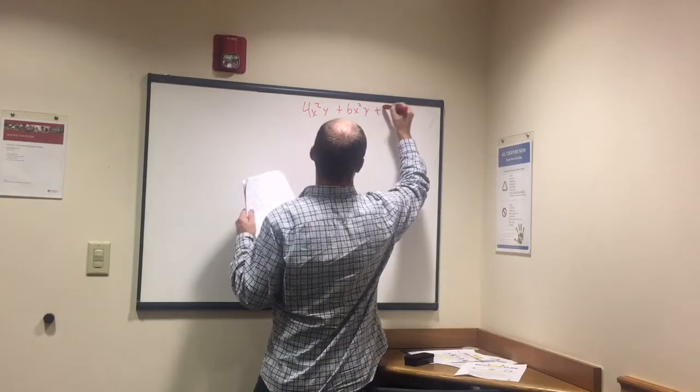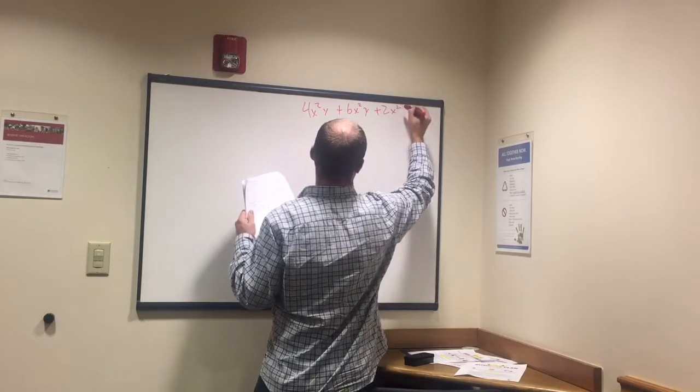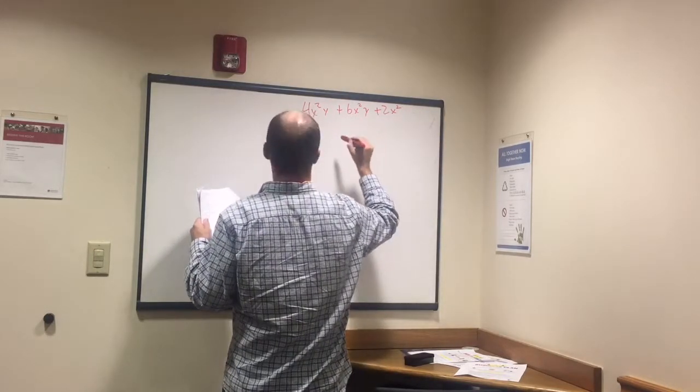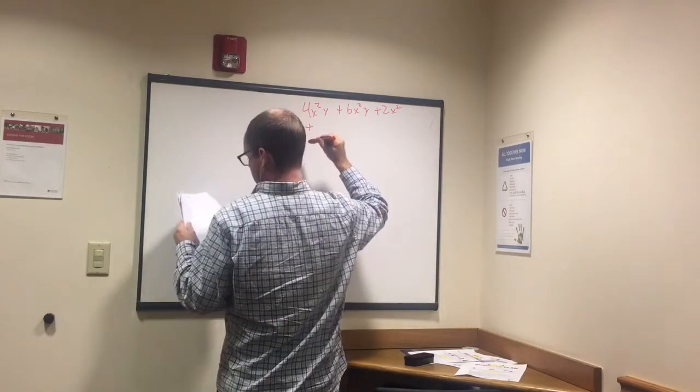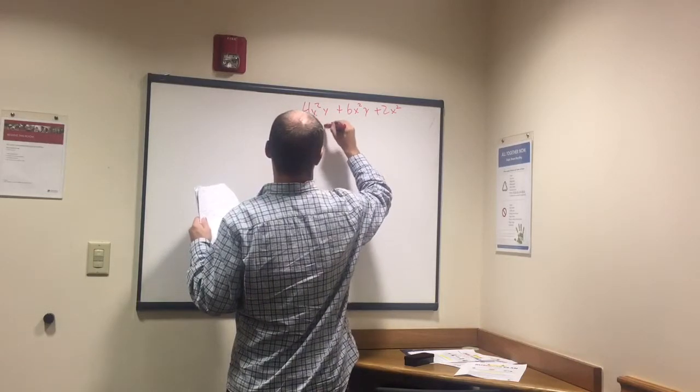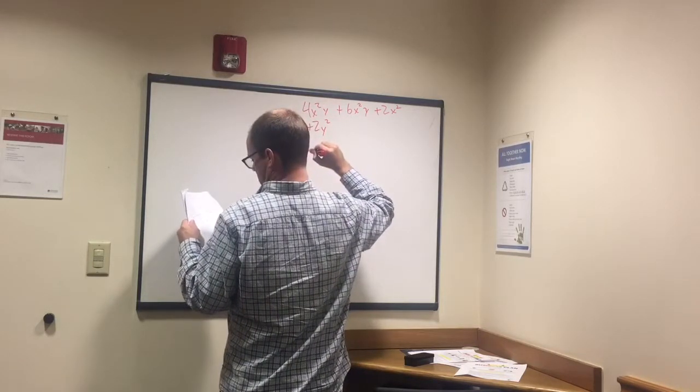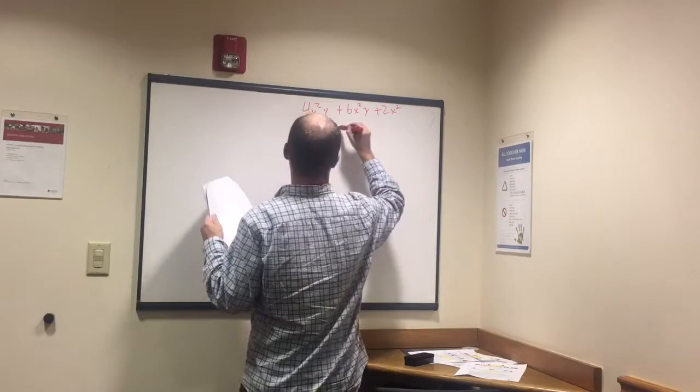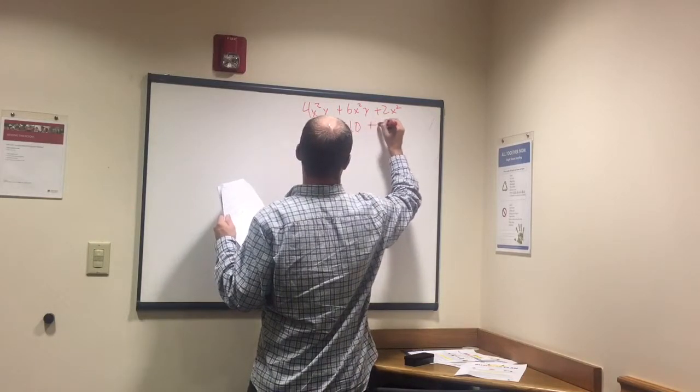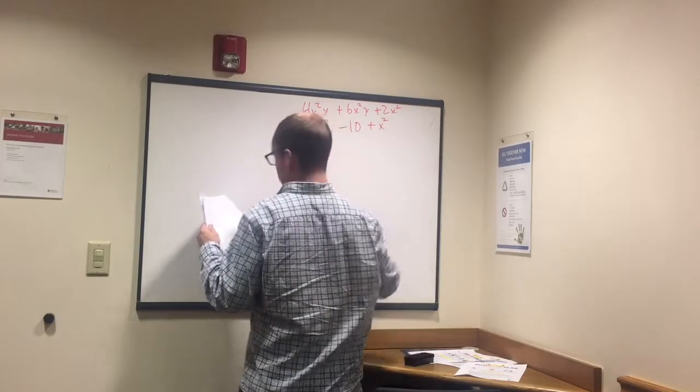plus 2x squared plus 2y squared plus 2y squared minus 10 plus x squared. What does this equal?